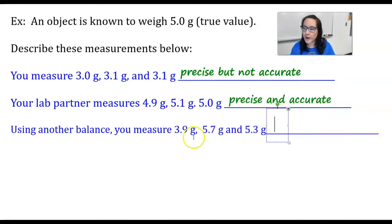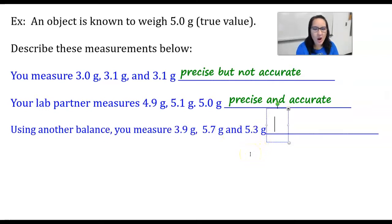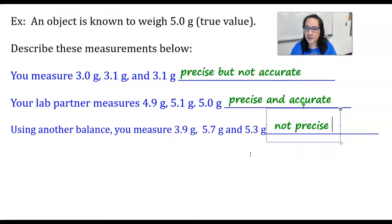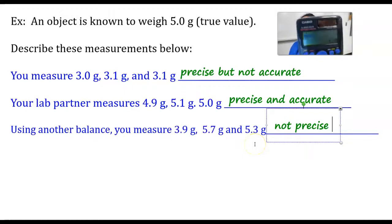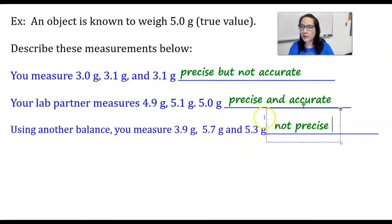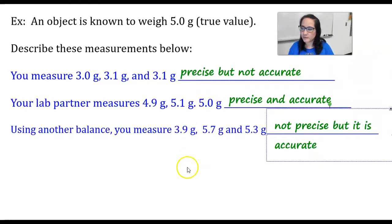In the last example, 3.9 grams, 5.7 grams, and 5.3 grams are not close to one another, so those are not precise. However, if I take the average of these three, I get 4.96, and that's really close to the true value of 5.0. So we say not precise, but it is accurate.